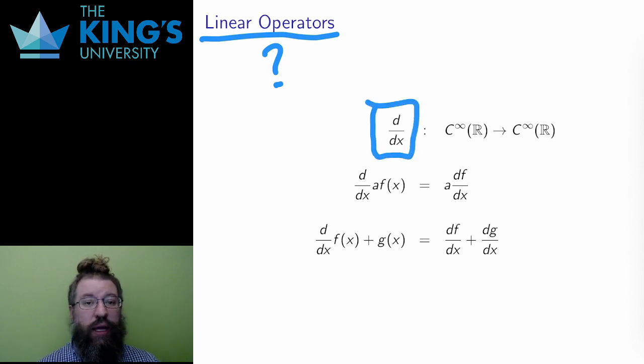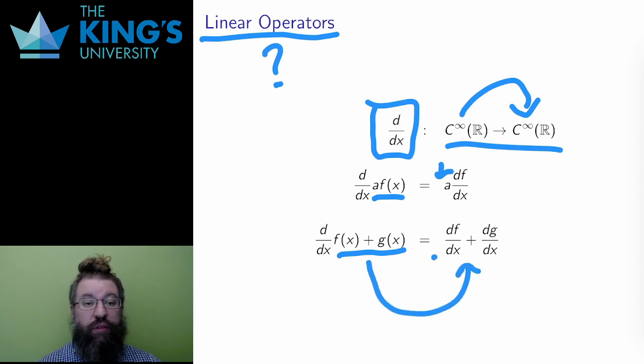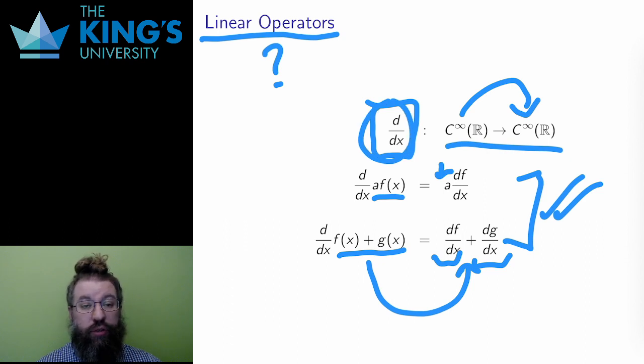d/dx. This is an operator that takes derivatives. And I can consider this as a transformation on C∞(R). Is it linear? Think back to the derivative rules. I can pull a constant out of the derivative. The derivative of a times f(x) is a times the derivative df/dx. And I can also split up a derivative over sums. The derivative of f + g is df/dx plus dg/dx. The derivative is linear.